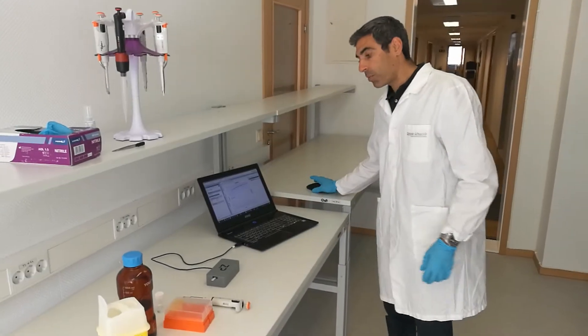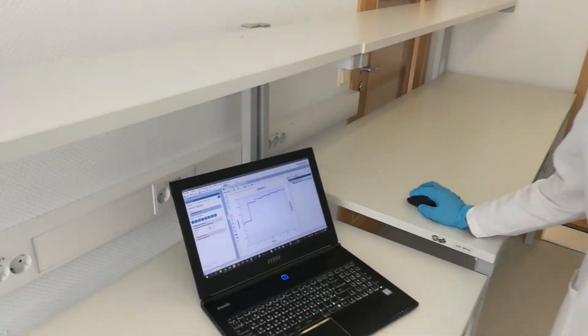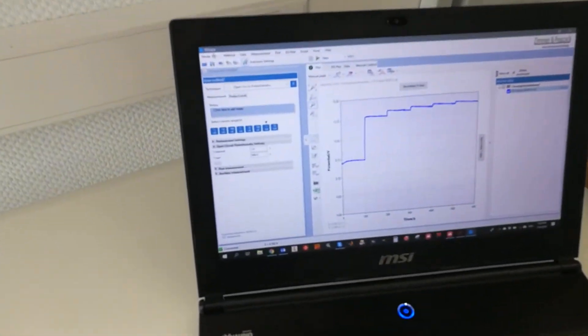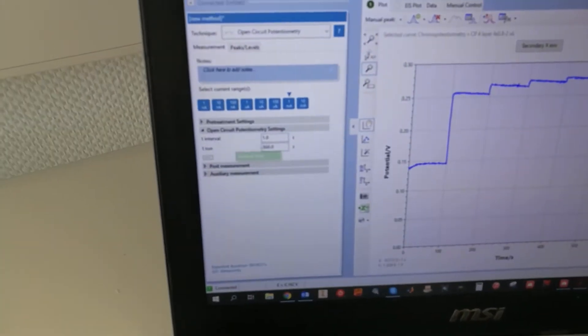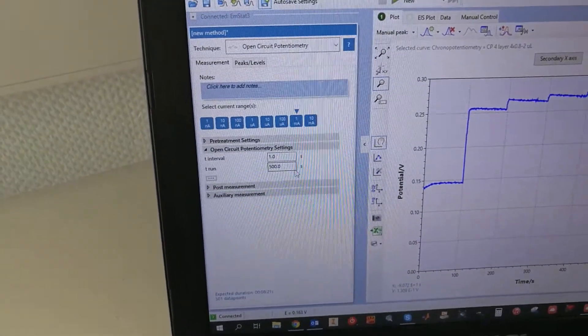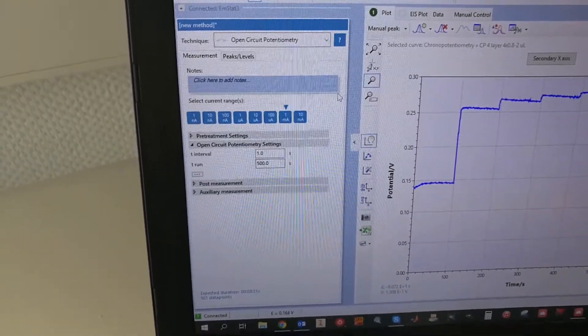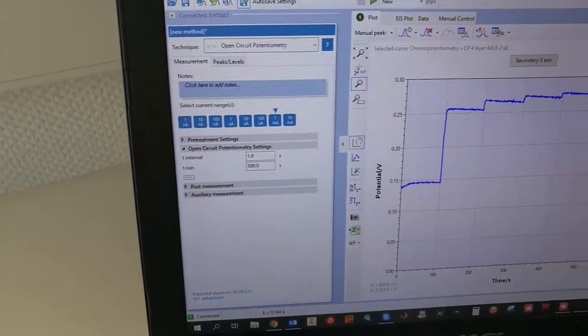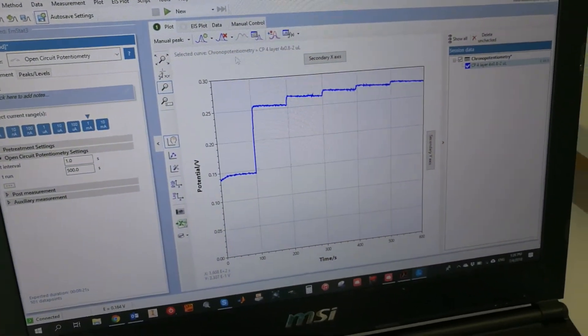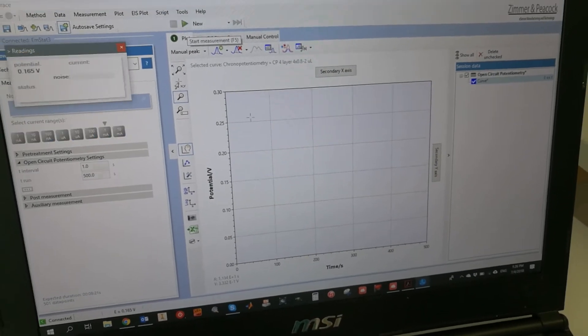The potentiostat is connected to the PC. I'm going to start running. I'm using a sampling interval of 1 second, and I'm going to run it for 500 seconds - in this case it could be 100 seconds, just to show. This is a typical response to different concentrations of potassium for this membrane thickness. I started running.